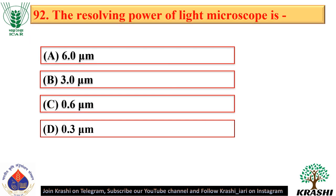Question number 92. The resolving power of a light microscope is 0.3 micrometres — option D.